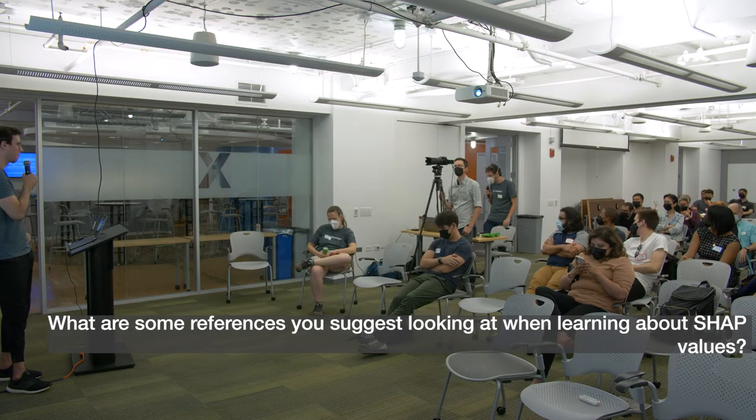There's a question from the internet: what are some references you suggest looking at when learning about SHAP values? The SHAP values GitHub — the base Python package — is excellent, really really good. It's got plots of basically everything you can do with SHAP values. The original paper is also excellent. We were very fortunate that LightGBM has built-in methods for calculating these feature contributions; otherwise I think they'd be very expensive to calculate. Check out the GitHub of the SHAP Python package and the original paper that proposed SHAP values.